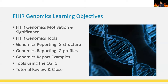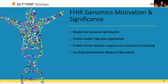Today we want to focus on the genomic part of FHIR. We'll look at the FHIR Genomics motivation and significance, tooling around FHIR Genomics, the Genomics Reporting IG structure — which profiles are contained and how they look — some examples of what a variant looks like in FHIR, and then tools implementing the Clinical Genomics IG, followed by a short review and closing.